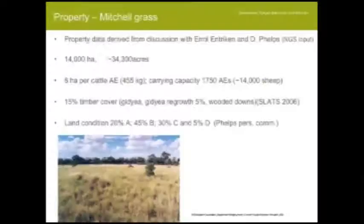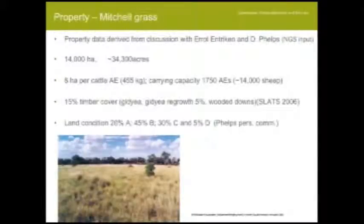The property I'm using as an example today is a Mitchellgrass property. I've had input from Errol Entrican and David Phelps to design it, and David drew on the Northern Grazing Systems project which MLA has been funding — some of you may have been involved in generating that data. Hopefully the property is relevant to the local area. It's 14,000 hectares, about 34,000 acres, stocked at eight hectares per cattle adult equivalent, which is a 450 kg adult beast, standardised so we can compare impacts from calves through to larger animals.